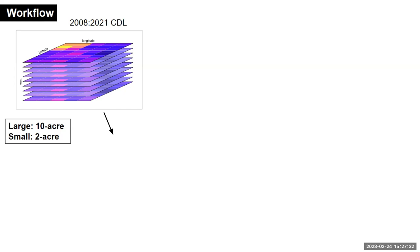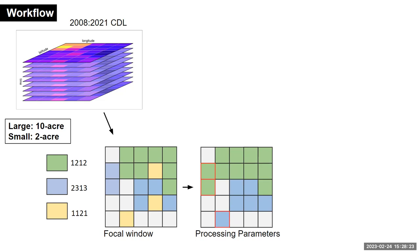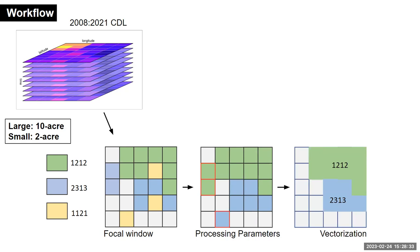To account for areas where field densities may be small or large, we test two settings: a large setting honing in on field sizes of 10 acres or more, and a small setting looking at fields of two acres or more. We identify these unique sequences at the individual pixel level. Yellow pixels represent cases where, in one of the four years of interest, the CDL algorithm didn't identify the crop correctly — the focal window analysis allows us to correct that. We then target different edges, holes within fields, and isolated pixel clumps depending on the acreage sizes, leaving us with a vectorization representing those unique sequences and field edges.